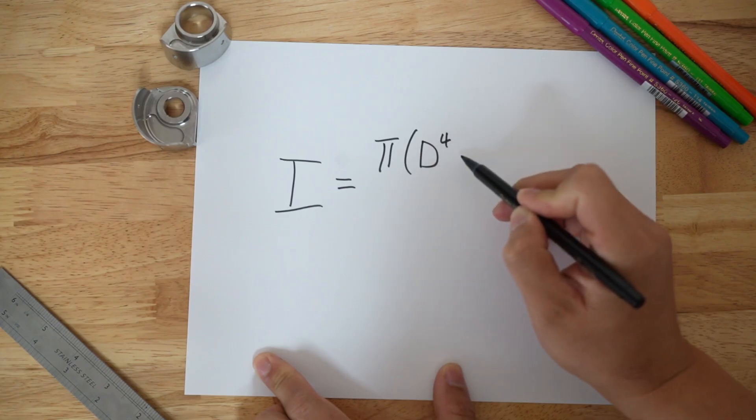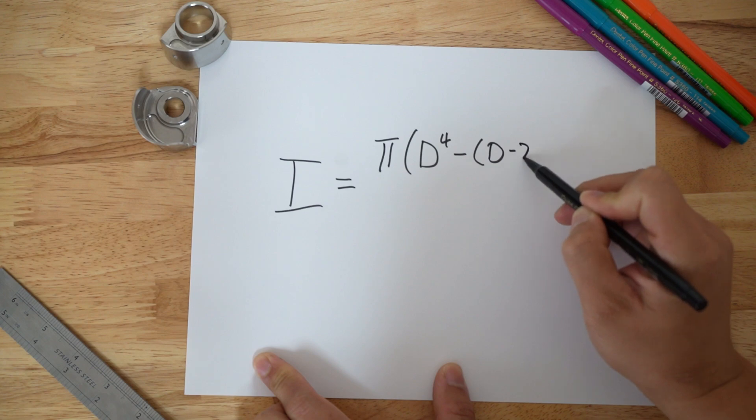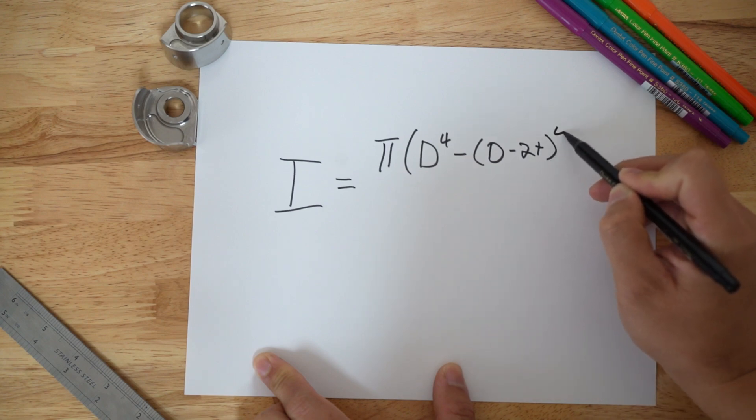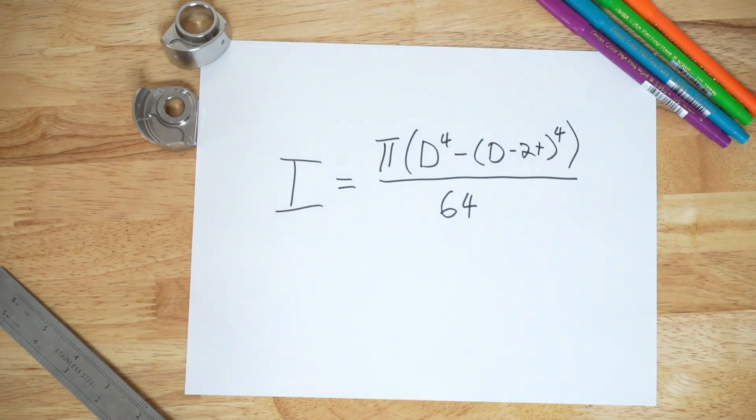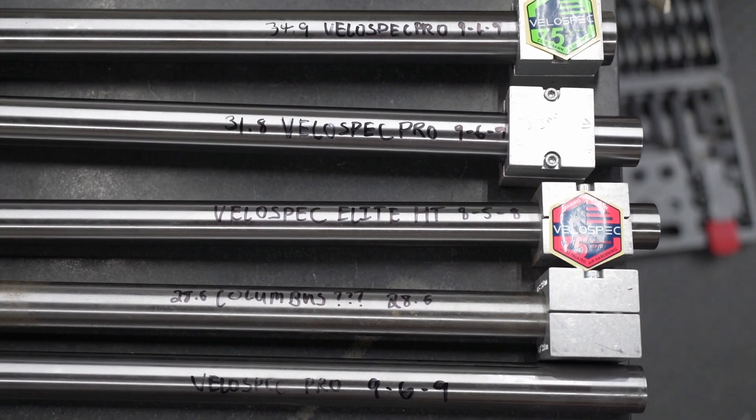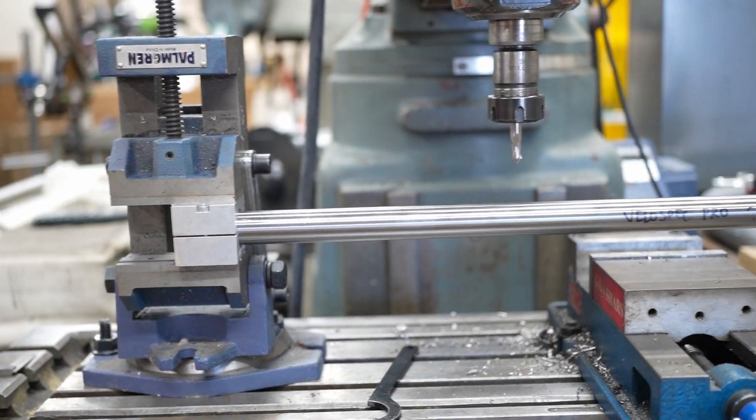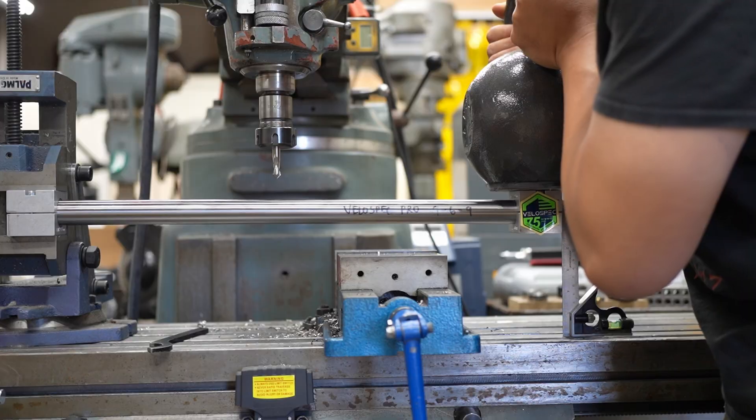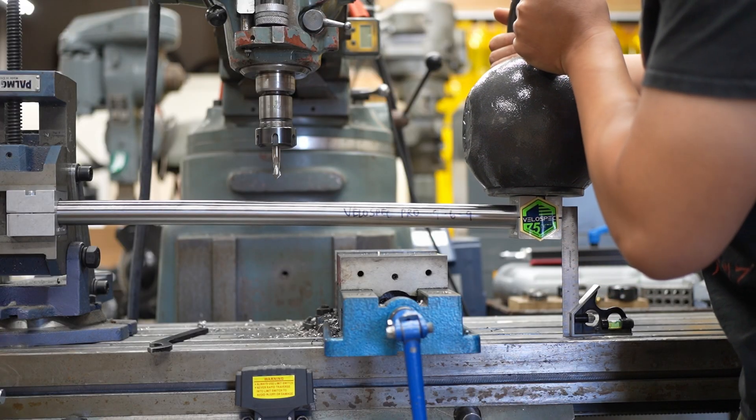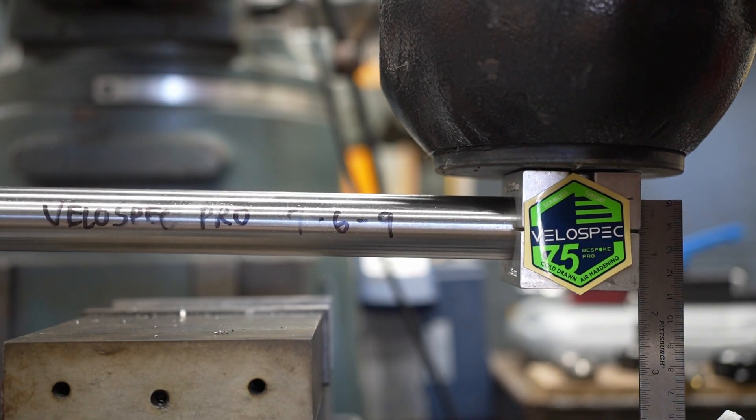This is the area moment of inertia equation for a hollow tube. The key takeaway is that the diameter is quartic, to the fourth power. This means that small changes in tube diameter will result in large changes of stiffness. Let's look at some real-world examples with a quick experiment. I clamped one end of the tube, placed a 24kg mass on the other end, exactly 520mm from the clamp, and measured the deflection of each tube.